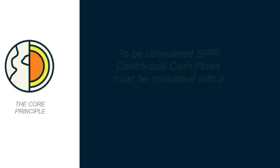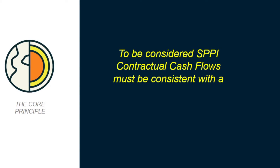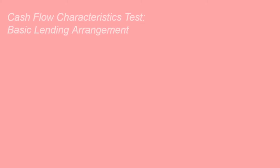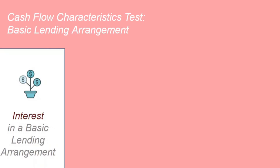To be considered solely payments of principal and interest, the cash flows of an instrument should be consistent with a basic lending arrangement. You have every right to ask what a basic lending arrangement is, so let's look at what interest looks like in a basic lending arrangement. According to IFRS 9, interest in a basic lending arrangement is most significantly comprised of certain components.